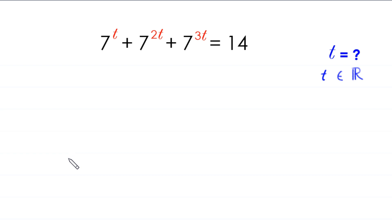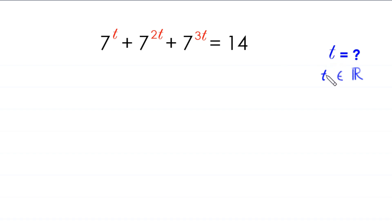Hello everyone, you are welcome to how to solve this very nice exponential equation. 7 to the power t plus 7 to the power 2t plus 7 to the power 3t is equal to 14. Our job is to find all possible values of t, such that t is a real number. So let's start.